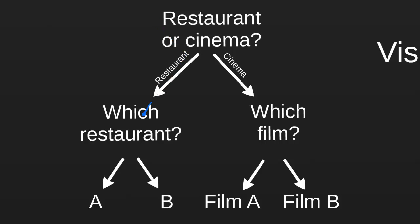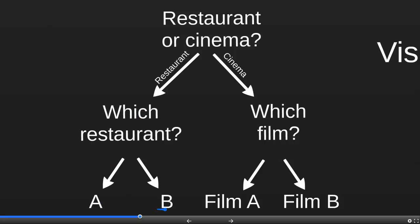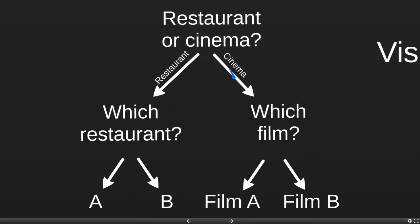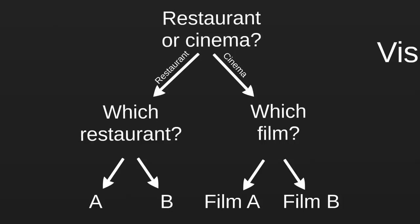If you decide to go to the restaurants, then the next decision you face is which restaurant — restaurant A or restaurant B. In contrast, if you decide to go to the cinema, then the decision is which film to see — film A or film B. These decisions will ultimately result in different outcomes. For example, restaurant A may have better reviews than restaurant B, so choosing restaurant A would seem to be the better decision. By looking at these different possible outcomes, we can decide which decision would be the best.